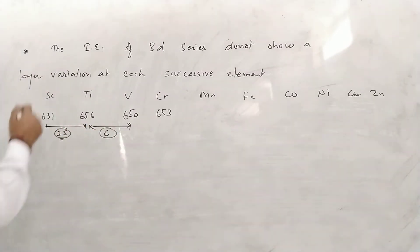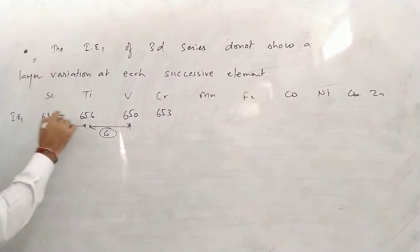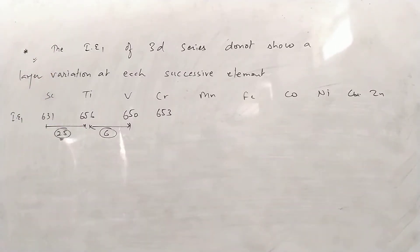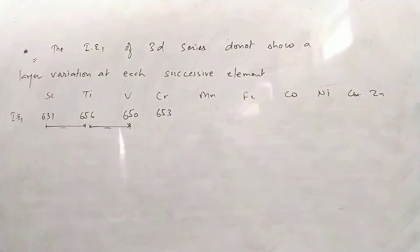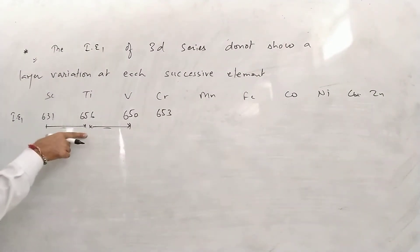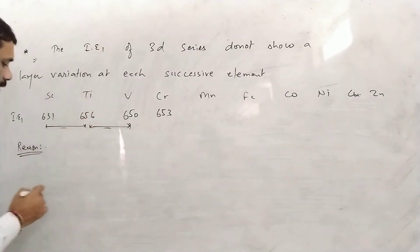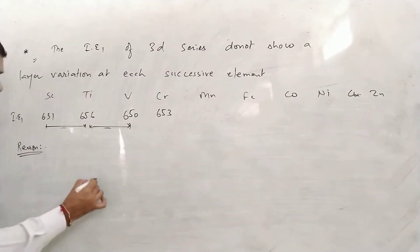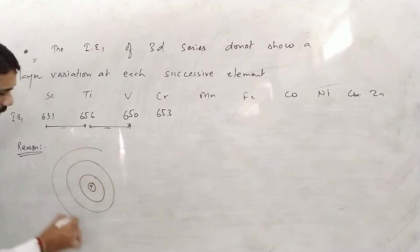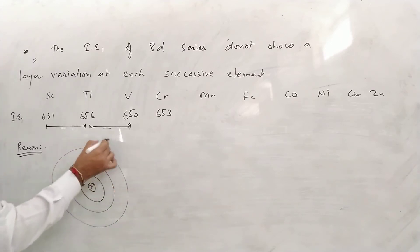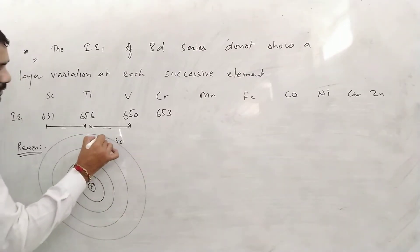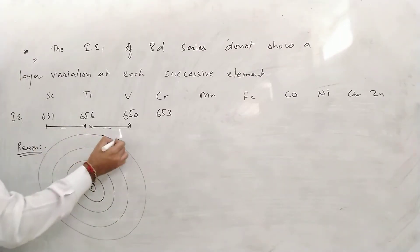In the first ionization energy of d-block elements, the variation is very small. What is the reason behind this? In s-block and p-block elements, there is a lot of difference between the ionization energy of one element and the next. But in d-block elements, when we fill the electrons, the outermost shell is 4S, and inside we have 3D electrons. The 4S electrons are the outermost electrons.